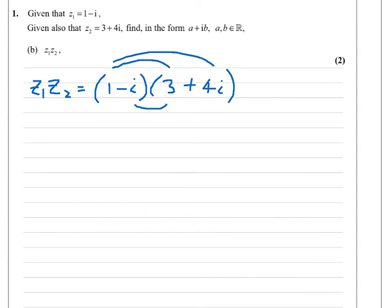And feel free, if you still draw the lines to do so, anything that helps. So we've got 3 plus 4i minus 3i, and then this will be minus 4i squared. I'm sure you can do this in your head, but we're just going to take our time.